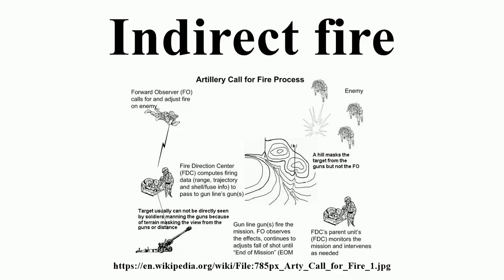In 1882, a Russian officer published a work on field artillery fire from covered positions that described a better method of indirect laying. In essence, this was the geometry of using angles to aiming points that could be in any direction relative to the target. The problem was the lack of an azimuth instrument to enable it, though clinometers for elevation already existed.